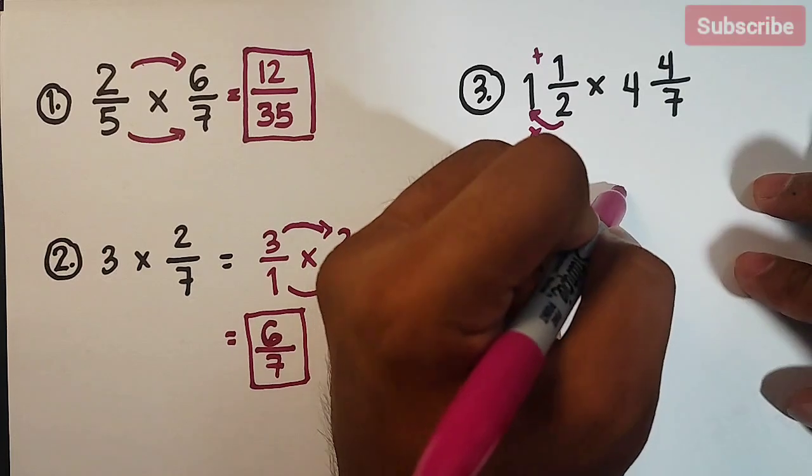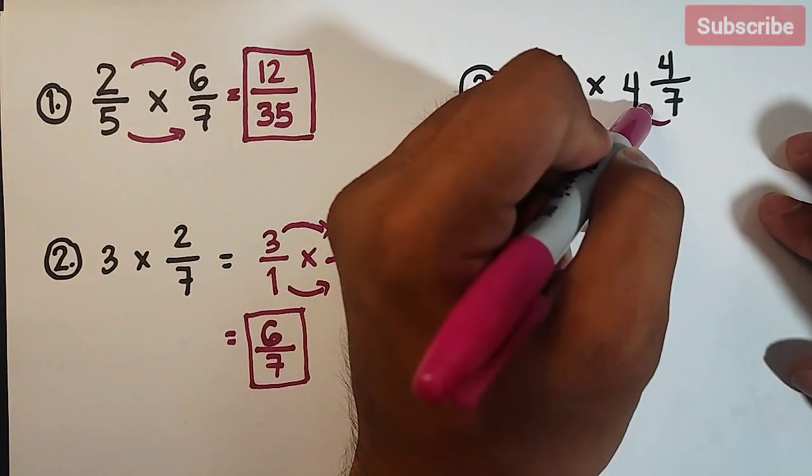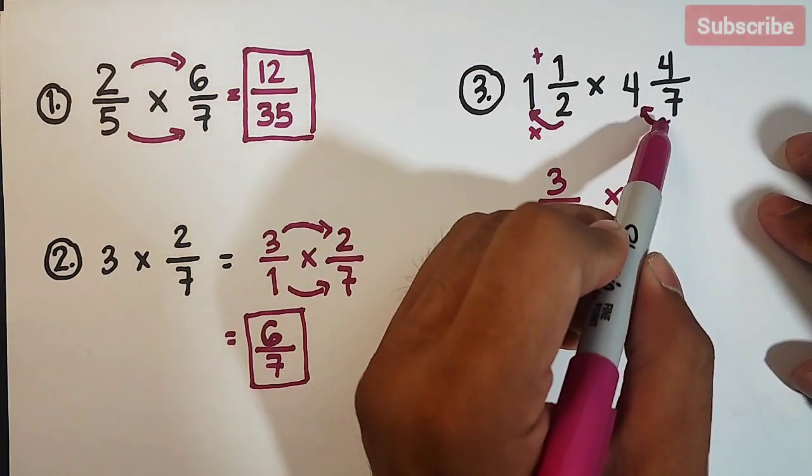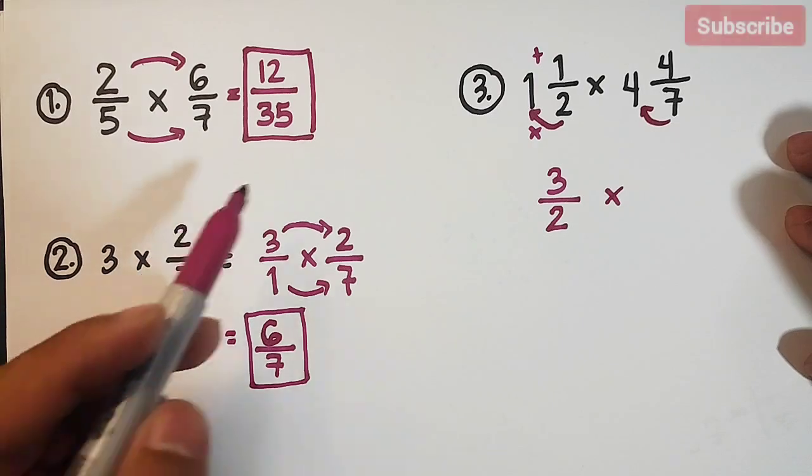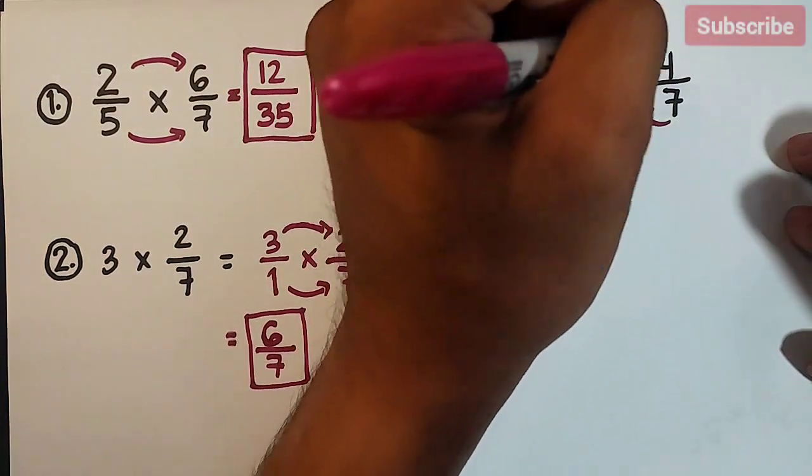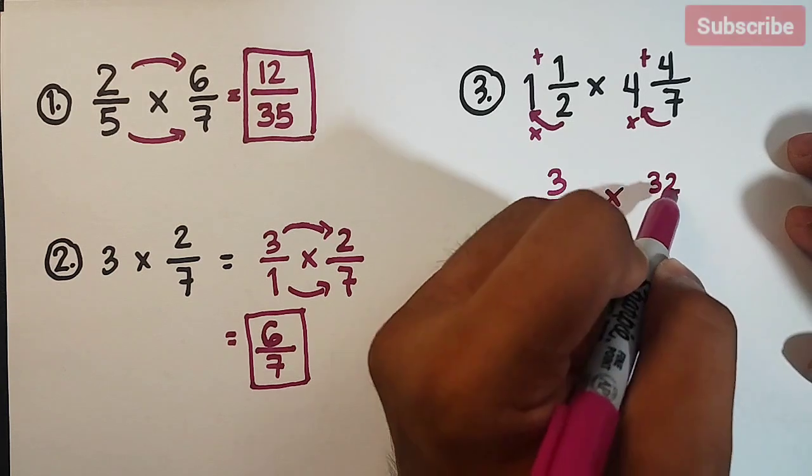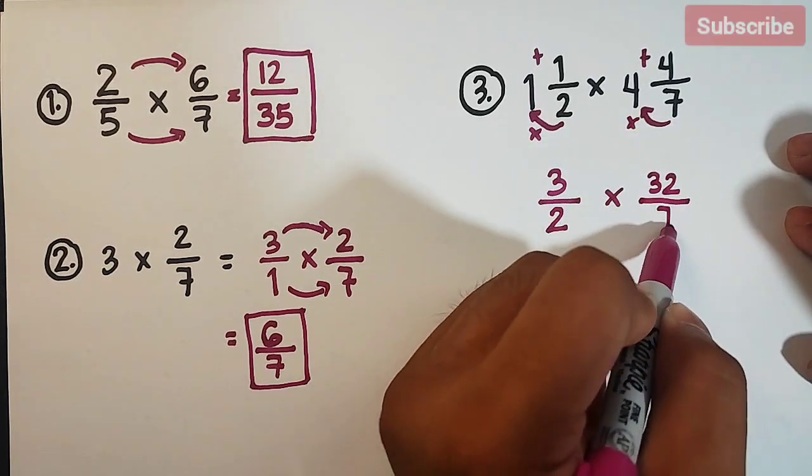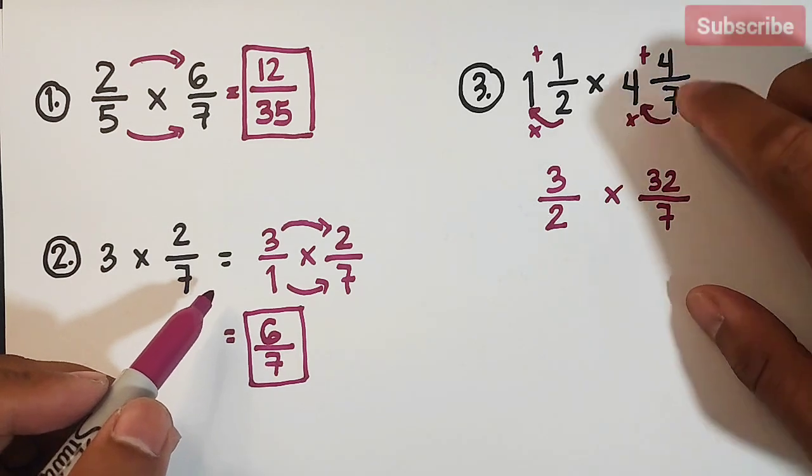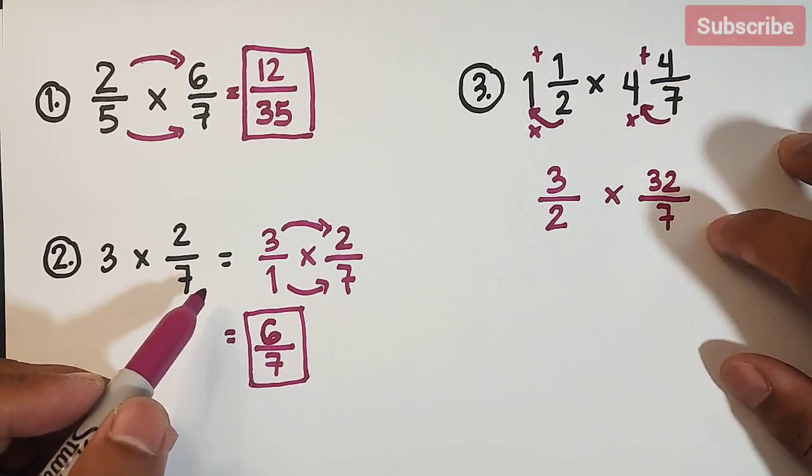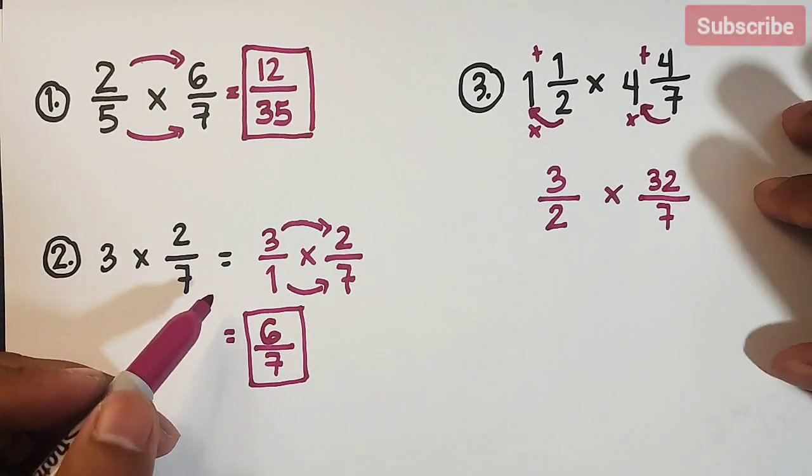Times. For the next mixed number, we have 7 times 4, that is equal to 28, plus 4, that is equal to 32. And then copy your original denominator. So again, let's try again. 7 times 4 is 28, plus 4, that is equal to 32, over 7. So as you can see, we have 2 fractions right now, but it's improper.